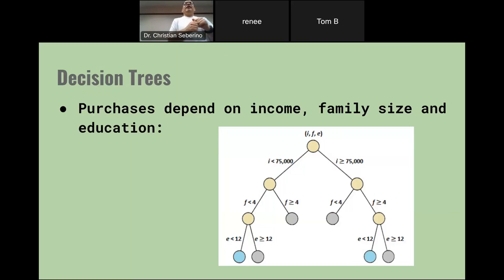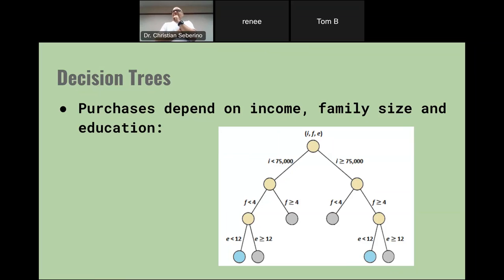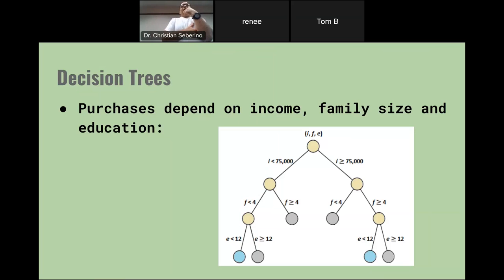On the left side — income less than $75,000 — if they have a huge family of more than four members, they won't buy furniture. If they have less than four in the family, there's a chance they will. Then the final test on the bottom left is their education level. If they have less than a high school education they'll buy furniture; if more than a high school education, they won't. On the far right, if they have high income but a small family size, they're probably not going to feel the need to buy furniture either.